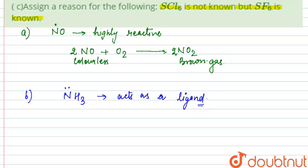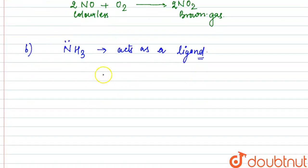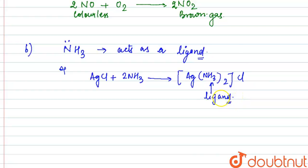To confirm this, let us have some reactions as examples. Take AgCl and react it with NH3. The complex that forms is [Ag(NH3)2]Cl. Here NH3 is behaving as a ligand because it has a lone pair.